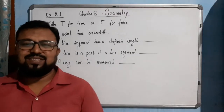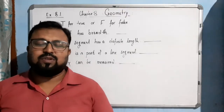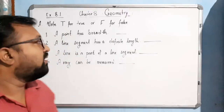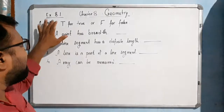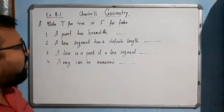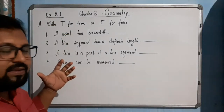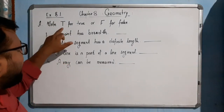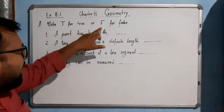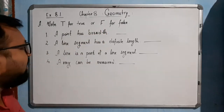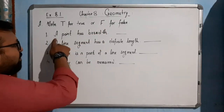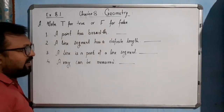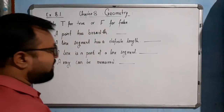Hello students, now we come to the first exercise of this chapter, Exercise 8.1. In this first question, write T for true and F for false. Now, 'a point has breadth' — is this true or false?